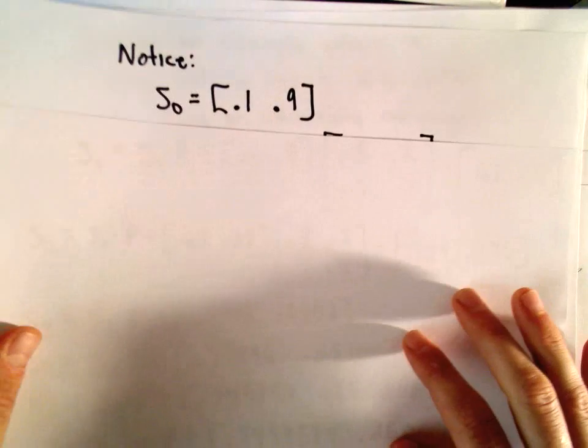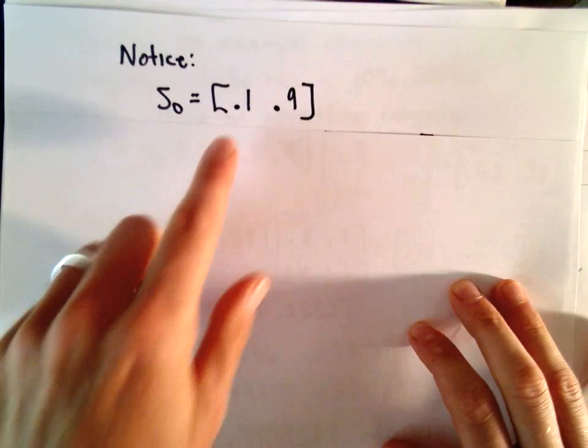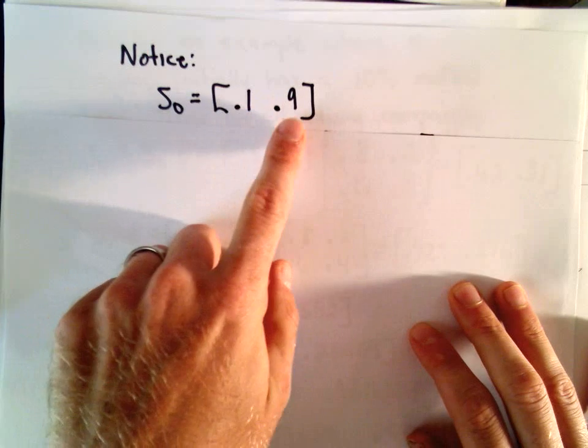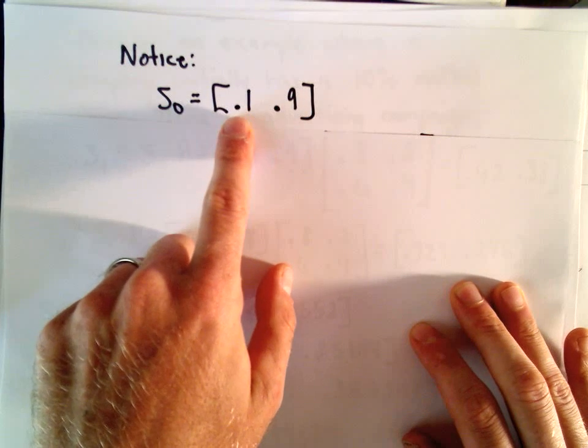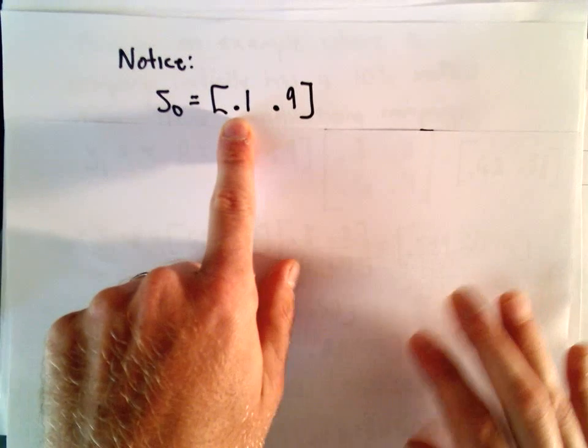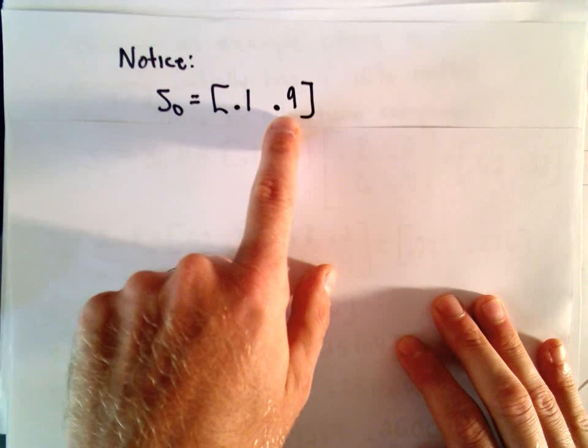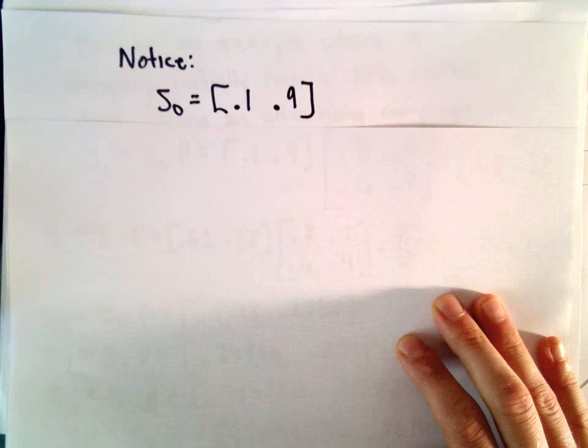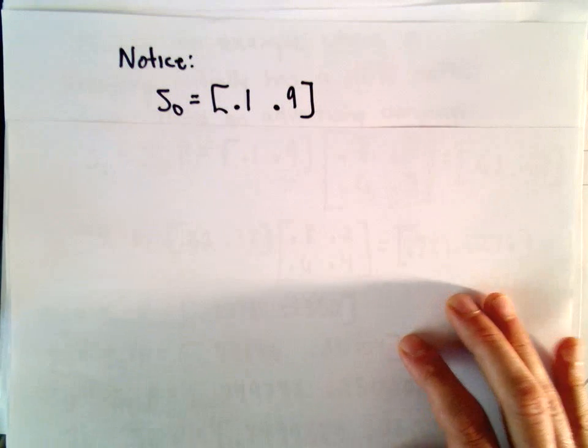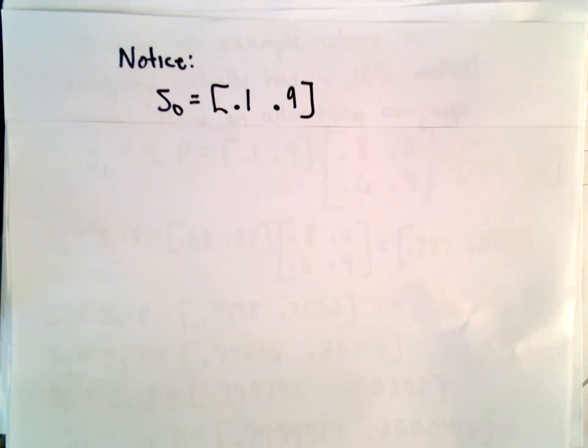Our initial state matrix would have values 0.1 and 0.9. Again, it says that 10% of the market belongs to brand A, and 90% of the market belongs to its competitors. Let's assume that this transition matrix is information per month.